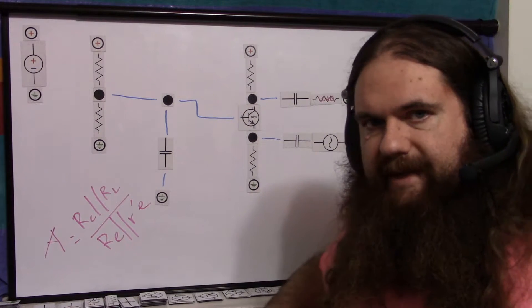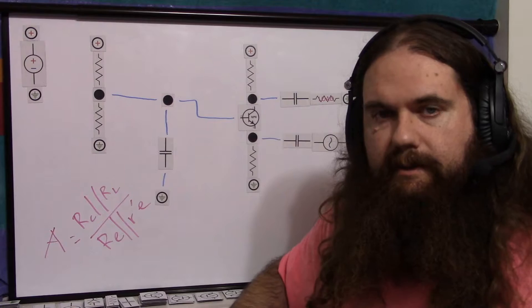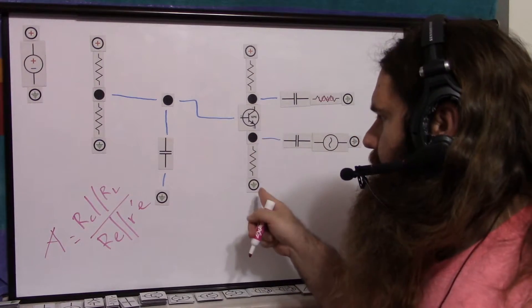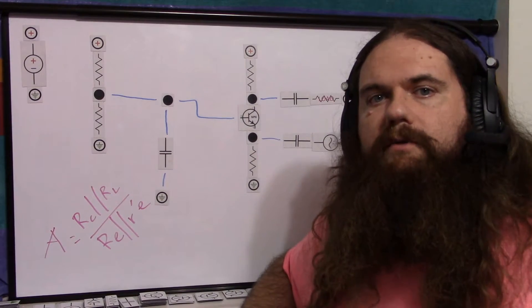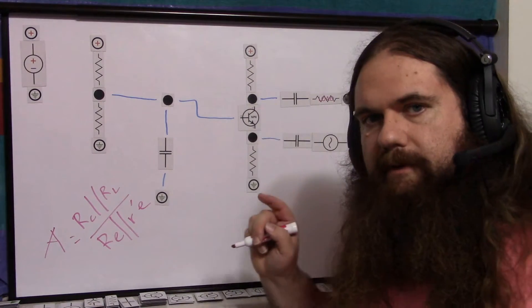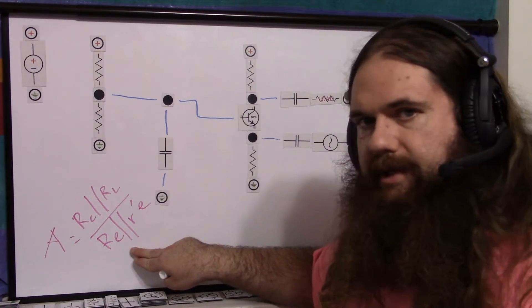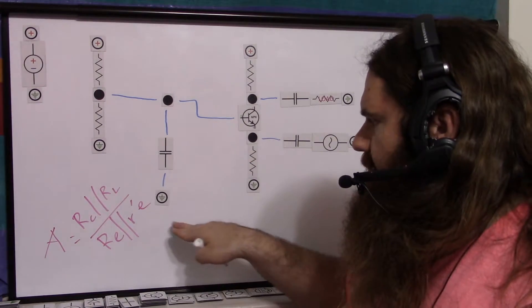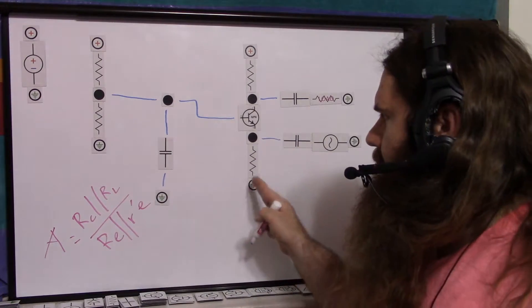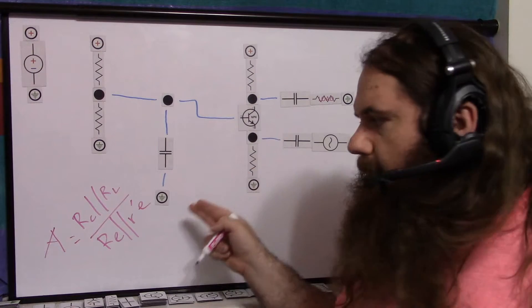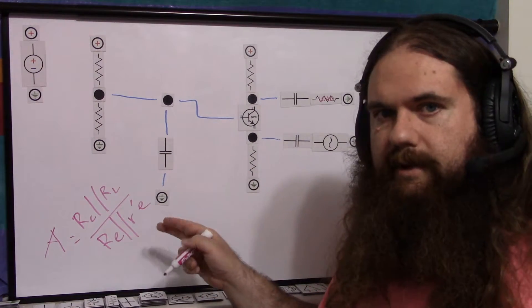So r apostrophe e is 25 millivolts divided by the emitter current. For just a single milliamp of emitter current, that goes down to only 25 ohms. And every little bit above that makes it go down even further. So the first thing is to realize that the gain is proportional to this resistance.